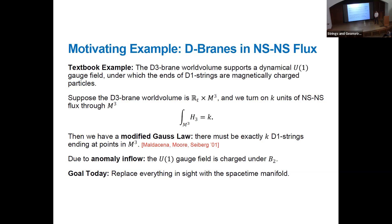This can be viewed as a version of anomaly inflow. The U(1) gauge field on the world volume is electrically charged under B2, the NS-NS gauge field, and so it transforms non-trivially. You can understand this non-trivial transformation as leading to the modified Gauss law in the presence of the background. My goal today is to replace everything in sight with the space-time manifold. The essential difference between quantum gravity and quantum field theory is that in quantum gravity, the space-time manifold is a dynamical degree of freedom — it can fluctuate — and so it's going to play the role of every player in this story, giving us a purely gravitational version of a modified Gauss law.